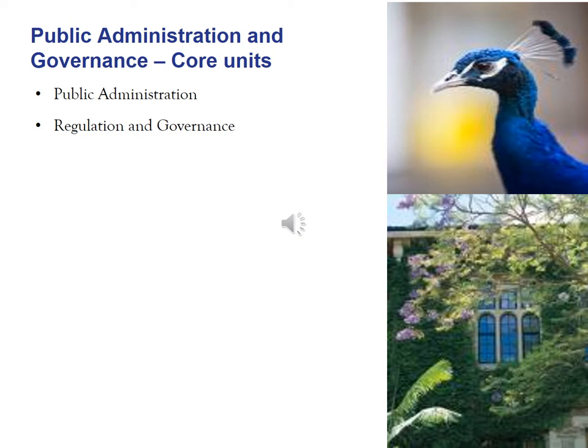To specialize in public administration and governance, you must complete two core units: public administration, and regulation and governance. In the public administration unit, you will learn about managing public organizations — from managing people to managing organizational performance, including managing organizational change.